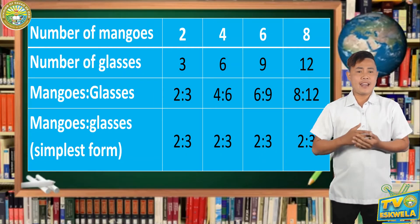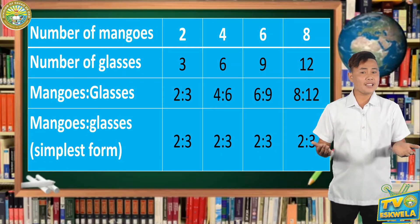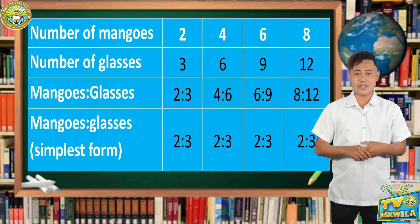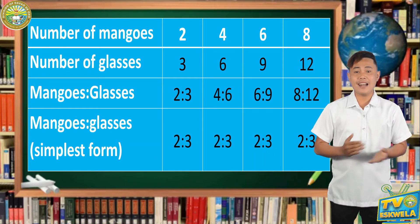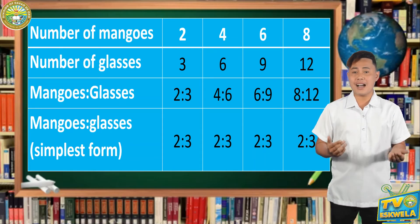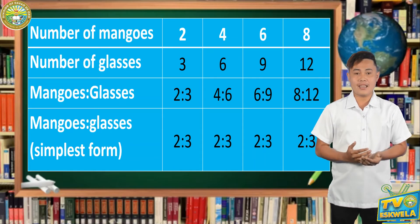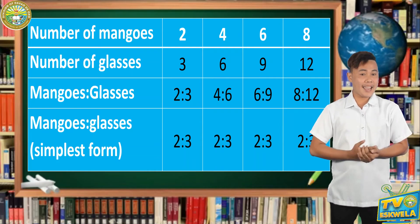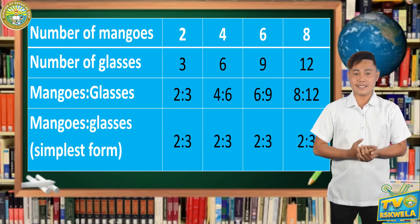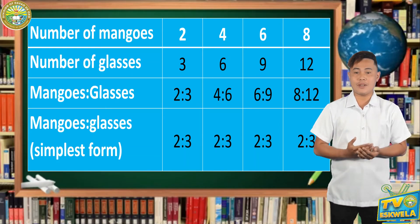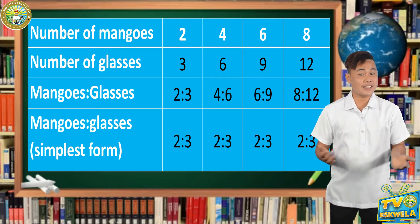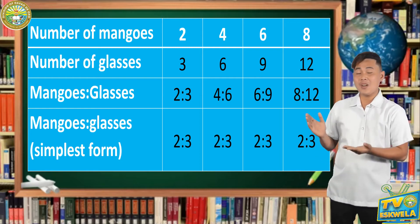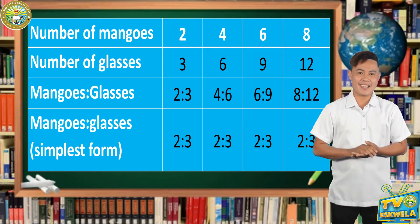Lastly, in every 8 mangoes, we can produce 12 glasses of mango shake. The ratio is 8 is to 12. In simplest form, we have 2 is to 3.